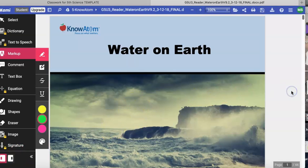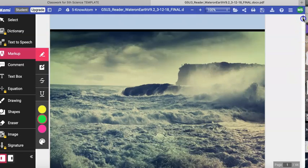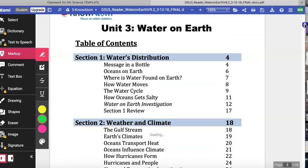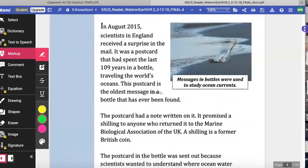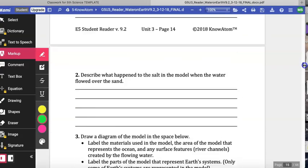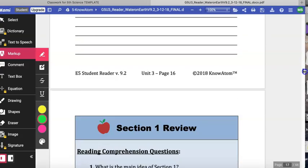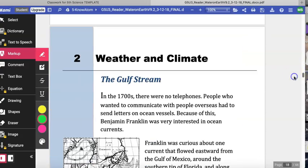Hello. Today we are going to be reading and highlighting lesson two of unit three, water on earth. Take out your student reader and open up to page 18, or scroll down to page 18 in your online version of the student reader, so we can begin with our highlighting.